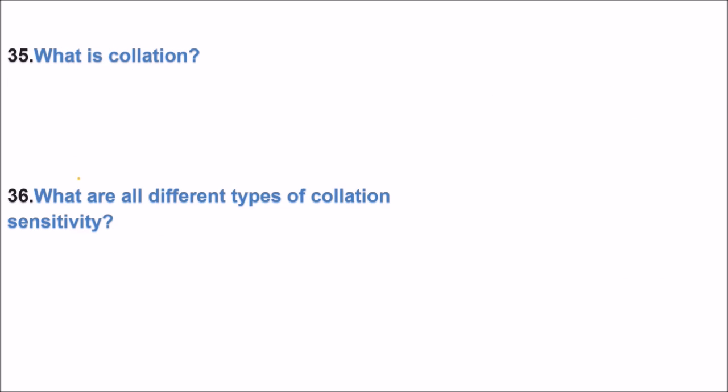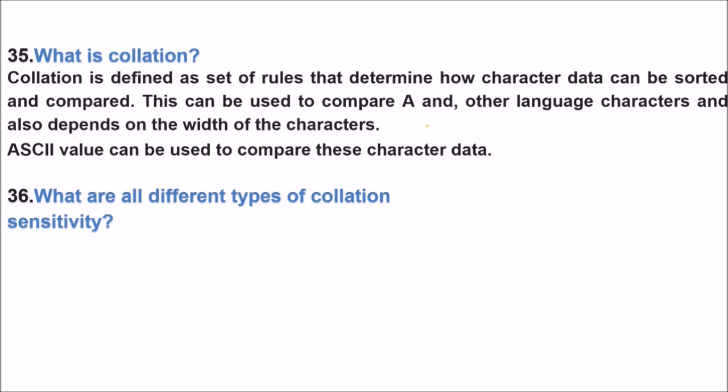What is collation? Let me first tell you about this then I'll give you an example. So collation is defined as a set of rules to determine how character data can be sorted and compared. Now we are talking about the character data. So this is to determine how character data can be sorted and compared. Now you have a string or character data, you want to compare them, to sort them.